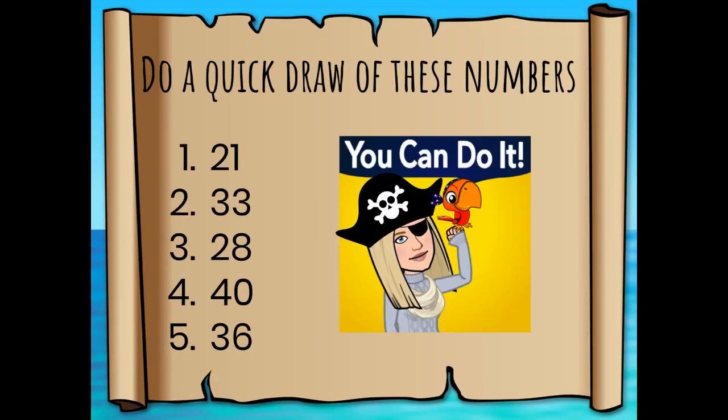All right, now it's your turn. Go grab your pencil and eraser and paper, your marker, your whiteboard — however you're going to do this. Do these one by one. Don't write all your numbers out at one time because you want to leave space between each one. Go ahead and do quick draws of all of these numbers. Pause this video, and when you're done, come on back, press play, and check your work.